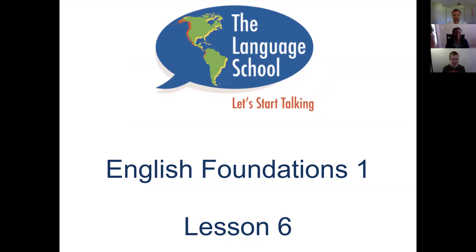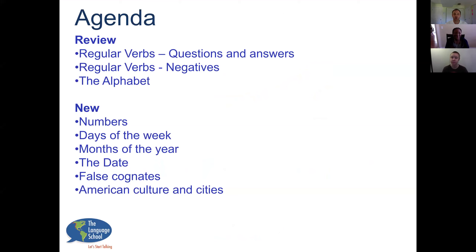Hi everybody. Welcome back for lesson number six of English Foundations 1. Today we're going to review and learn new things. We're going to start by reviewing our regular verbs and how to make questions and answers, as well as how to answer with negative statements. We'll also review the alphabet. New things we're going to learn today include numbers, days of the week, and the months of the year. We will learn how to say the date, some false cognates, and we'll talk about American culture in cities.